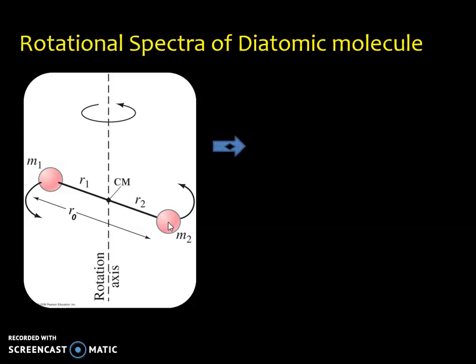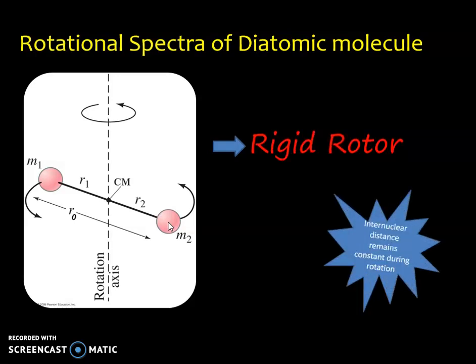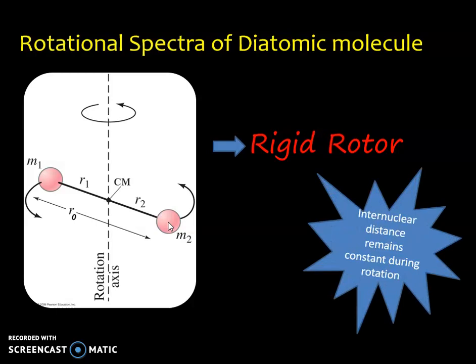We assume the molecule as a rigid rotor, that is, its nuclear distance does not change during rotation.